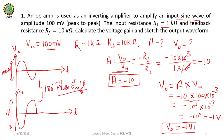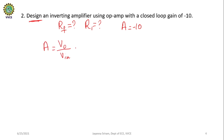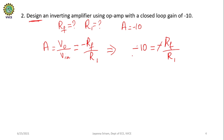That completes the solution to the first problem. Now let us take another example: design an inverting amplifier using op-amp with a closed loop gain of minus 10. When the question says 'design', you need to calculate the values of Rf and R1. Given gain A = minus 10 = minus Rf / R1, the minus signs cancel, giving Rf = 10 × R1.